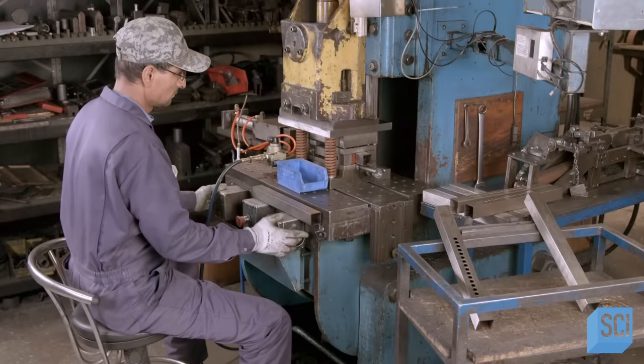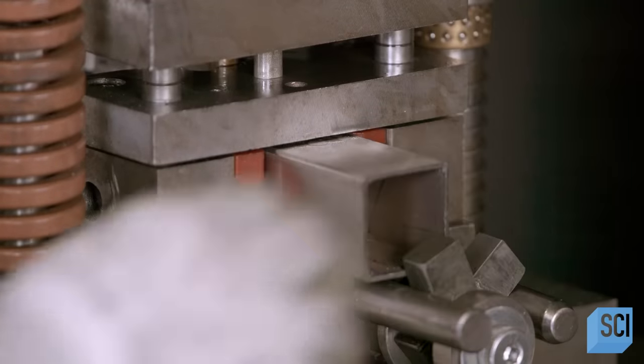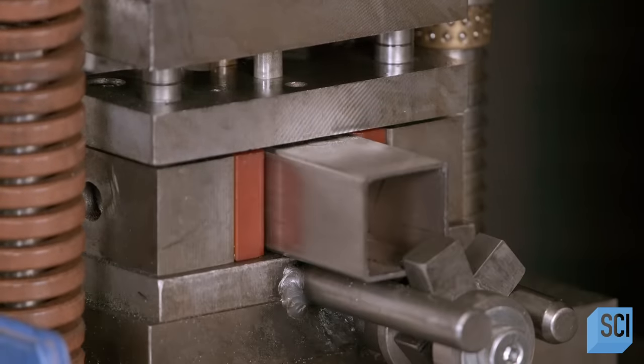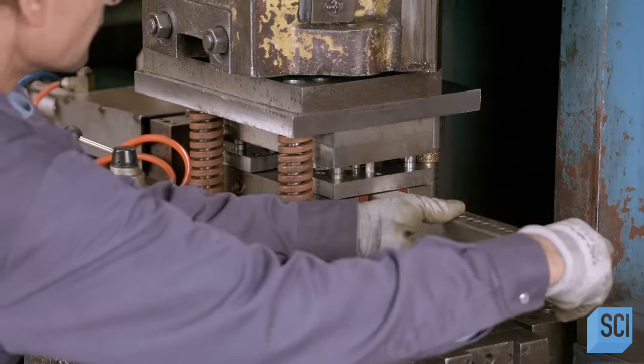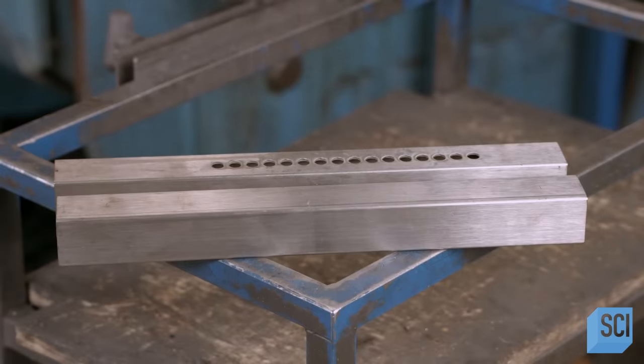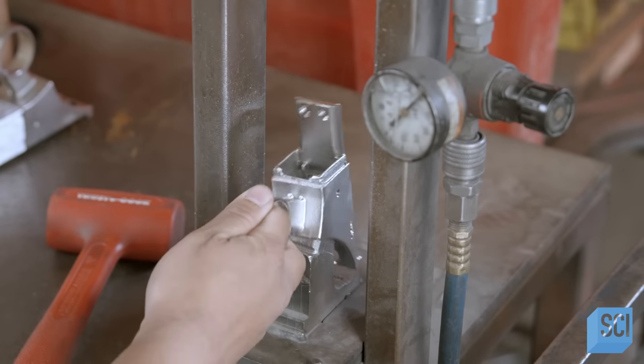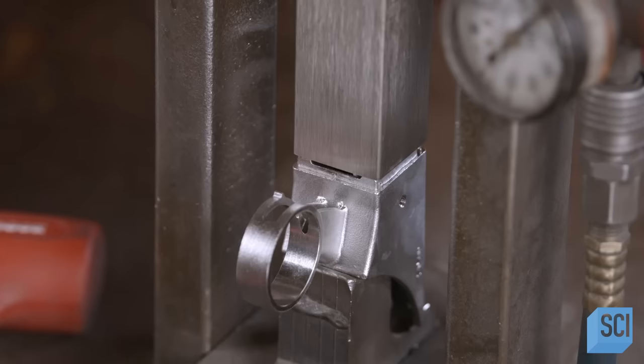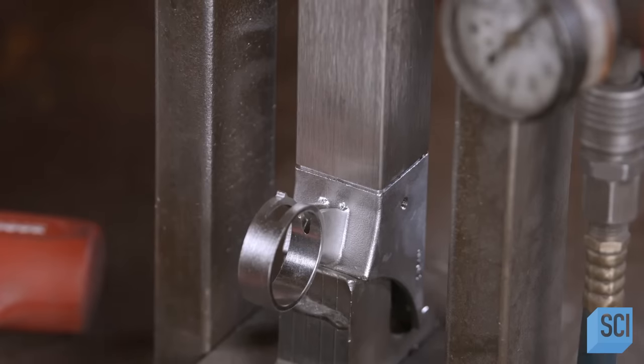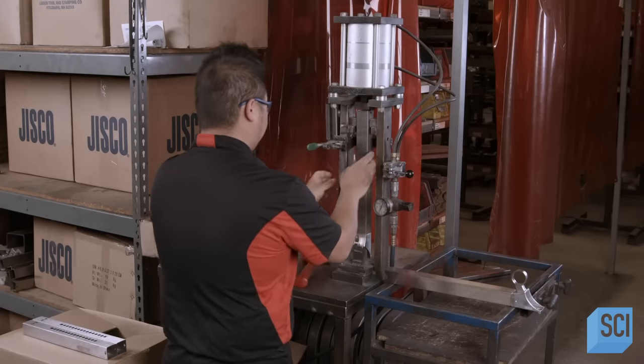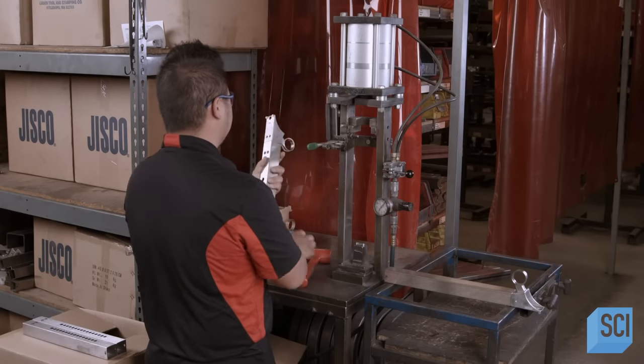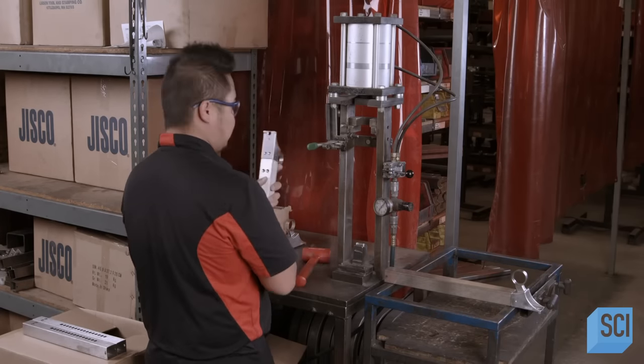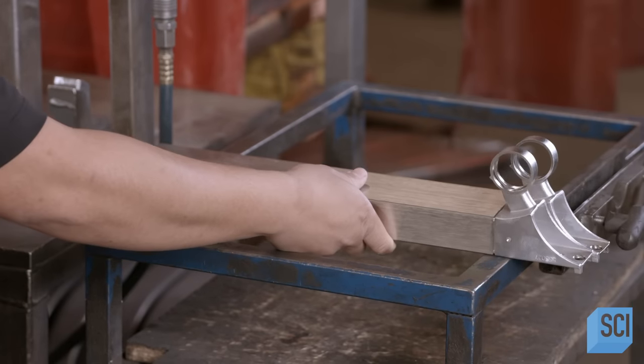At another station, a 55-ton press punches holes into posts for the bike's handlebar and seat. The holes are for adjusting the height of these parts. Next up is the casting for mounting the handlebar to the post. Using another press, the worker entrenches the top of the post in the casting. He taps the casting with a rubber mallet to tweak the installation and sets the assembly aside.